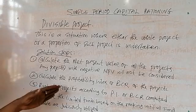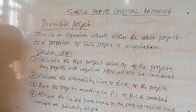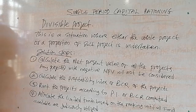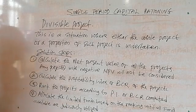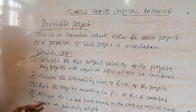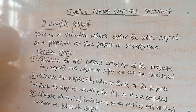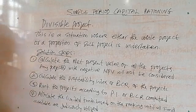The second step is to calculate the profitability index (PI) or benefit cost ratio (BCR) of the projects. The profitability index is calculated by taking the present value of the inflows over the outflow. The benefit cost ratio is net present value over outflow. You compute the PI or BCR for each of the projects based on their inflows and outflows.